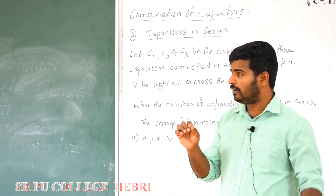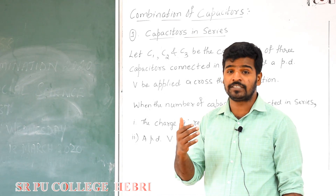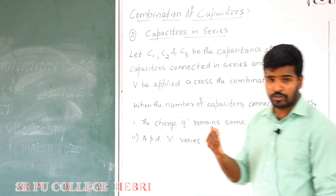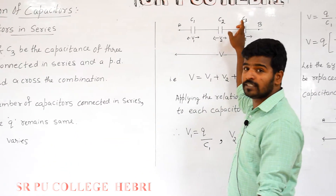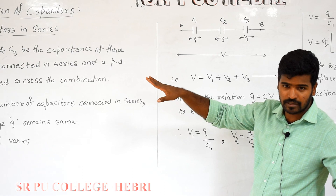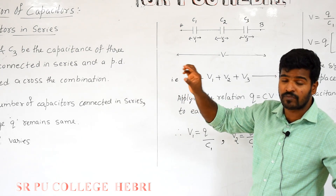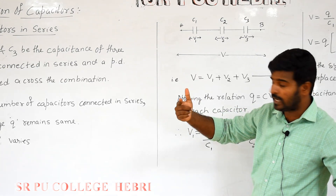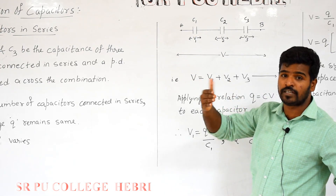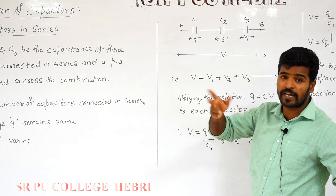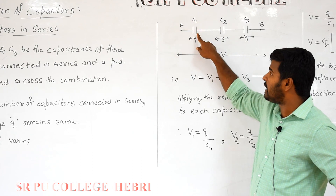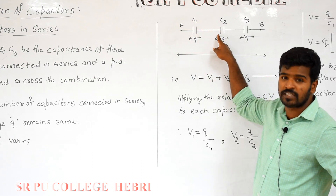Let C1, C2, and C3 be the capacitance of the three capacitors. Capacitors are said to be in series if they are connected end to end. In general, a capacitor consists of two parallel plate conductors separated by an insulating medium. The right side of the capacitor C1 is connected to the left side of the capacitor C2.